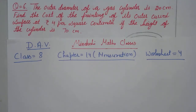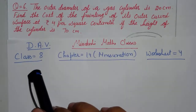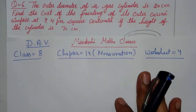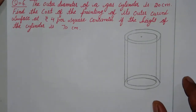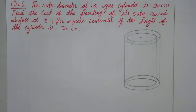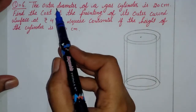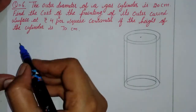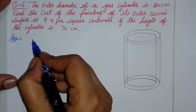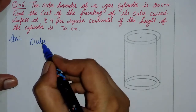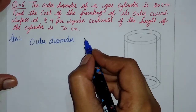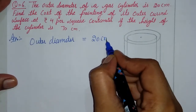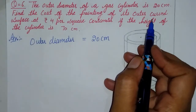Hello everyone, welcome to my YouTube channel Vinakshi Men's Classes. In this video we do Dave Class 8th Chapter 14 Mensuration, Worksheet Number 4, Question Number 6. The statement is: the outer diameter of a gas cylinder is 20 centimeters. So we write here what is given: the outer diameter of a cylinder is 20 centimeters. Find the cost of painting of its outer curved surface area.